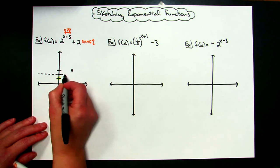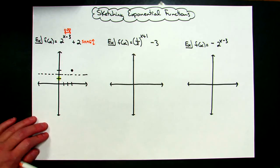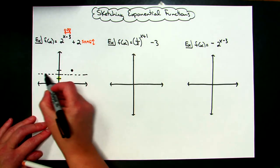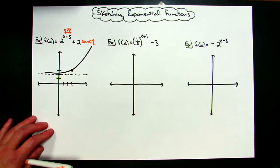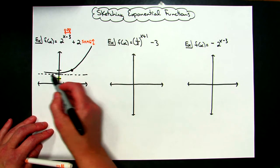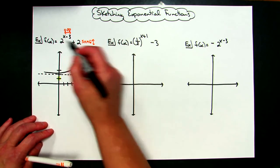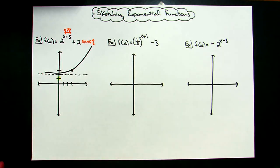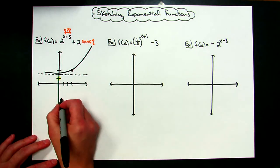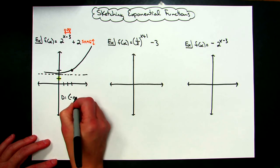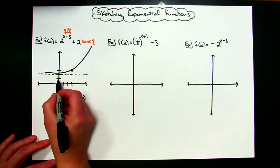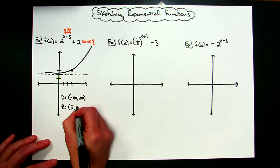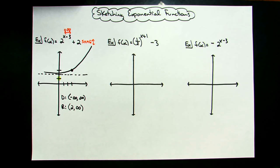I'll go ahead and put that asymptote on there. The graph is going to look the exact same way — it's going to hug this horizontal asymptote and go up to the right without bound. From this rough sketch, I don't know exactly how quickly it goes up, but if I'm only trying to find domain and range, that's really all the accuracy I need. The domain is going to run from negative infinity to positive infinity, and the range — since it gets really close to 2 — is from 2 to infinity.